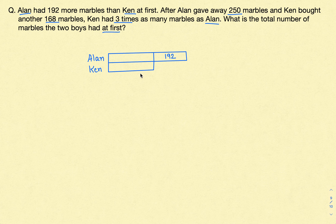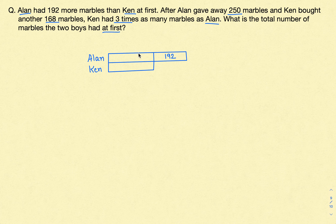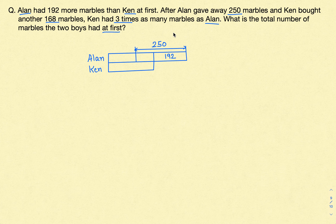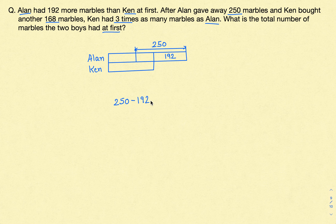Ellen is 192 more than Ken. The next step is Ellen gave away 250 marbles. You can see Ellen is giving away more than what he is more than Ken — he is giving away 250, so he gave away all the 192 and some more. From here to here it's 250, so this is what Ellen is giving away. We can calculate this remaining part: it will simply be 250 minus 192, which gives us 58. So we can say this part is 58.